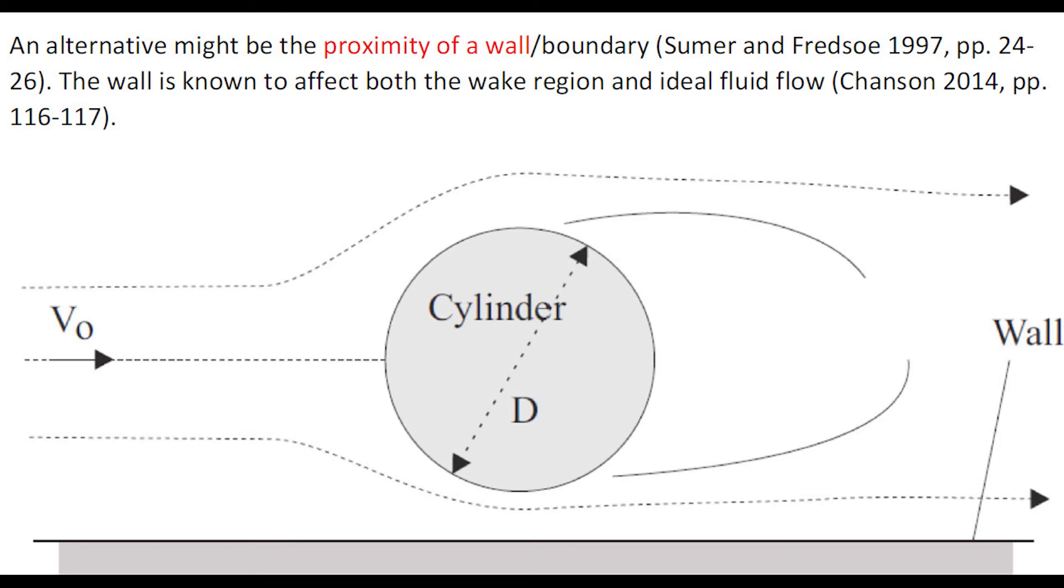An alternative may be the proximity of a wall or a solid boundary. The wall is known to affect both the wake region and the overall flow.